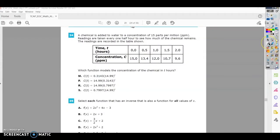Number 24 on the Algebra 2 practice test: a chemical is added to water to a concentration of 15 parts per million. Readings are taken every half hour to see how much of the chemical remains. The readings are recorded in the table. Which function models the concentration of the chemical in t hours?